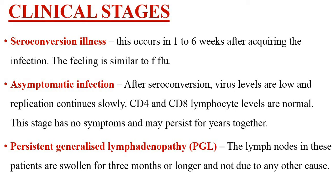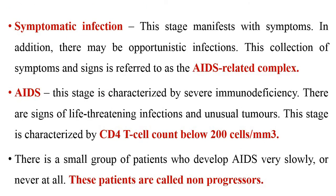The third phase is persistent generalized lymphadenopathy. The lymph nodes of the child may start to swell and this can last up to three months with no identifiable cause. Next is symptomatic infection, where symptoms of HIV manifest and opportunistic infections develop due to low immunity — this collection of signs and symptoms is known as AIDS-related complex. This is followed by the AIDS stage, characterized by severe immunodeficiency, life-threatening infections, tumors, and CD4 count below 200 cells. A small group of patients, known as non-progressors, develop AIDS very slowly.